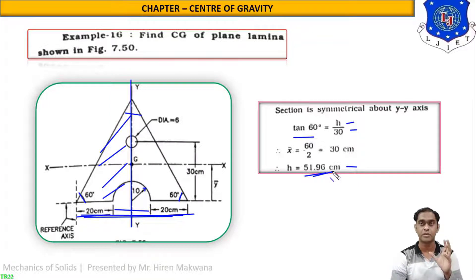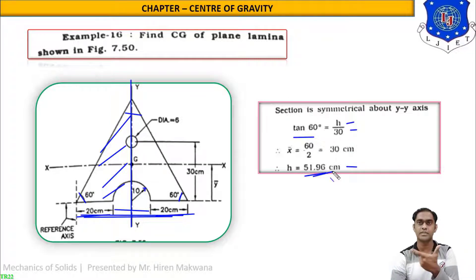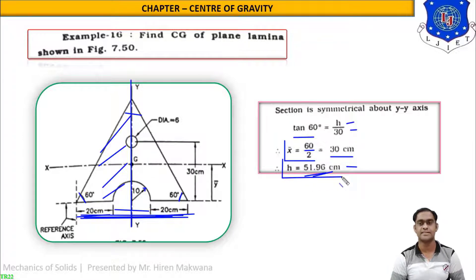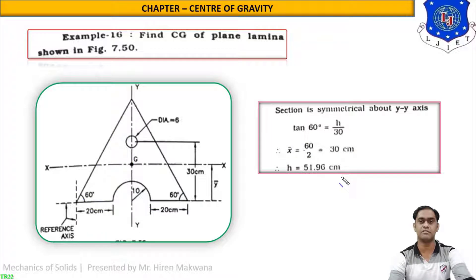This figure is symmetrical to the y-axis, so x-bar equals width of section divided by 2. Width is 60, so x-bar = 60/2 = 30 cm. Height h = 51.96 cm. Now let us see the y-bar calculation.